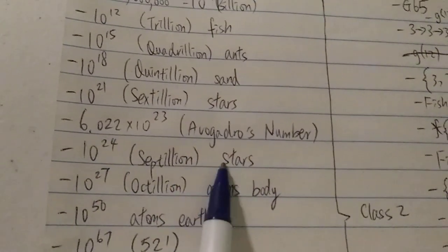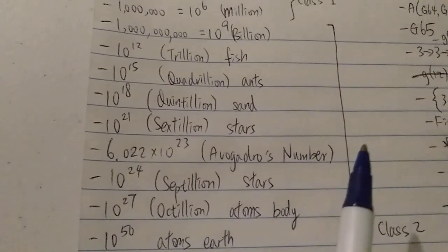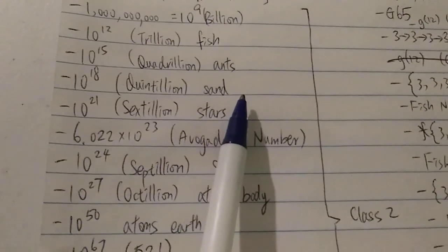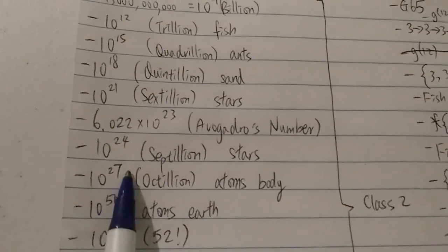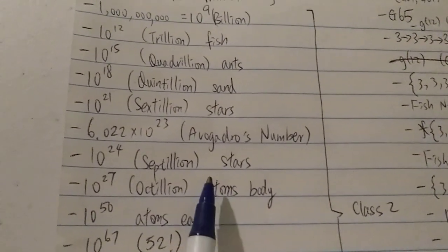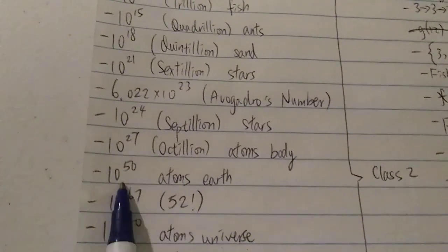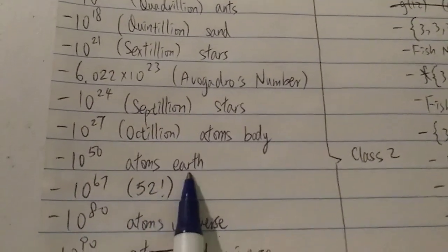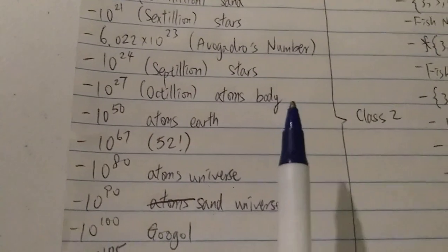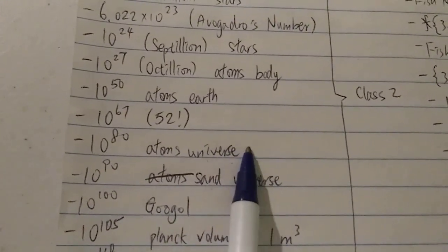10 to the 24 is septillion, the upper bound of the total number of stars in the observable universe. It's mind-blowing that there are actually more stars in the observable universe than grains of sand on all the beaches on Earth. Even more mind-blowing: 10 to the 27, one octillion, is the total number of atoms in a human body — more than the number of stars in the universe. We then jump to 10 to the 50, around the number of atoms on Earth, and 10 to the 67, equal to around 52 factorial — the total number of ways to arrange a deck of cards. 10 to the 80 is around the number of atoms in the observable universe.